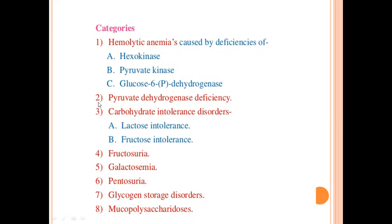Number 2 is Pyruvate Dehydrogenase Deficiency. If pyruvate dehydrogenase is deficient, then which reaction will not occur? Pyruvate is converted into Acetyl-CoA, and then in the TCA cycle it becomes a cause of energy generation. If pyruvate dehydrogenase is not functional, then it will not be able to form Acetyl-CoA, and therefore it will be difficult to run the TCA cycle, stopping the production of energy.